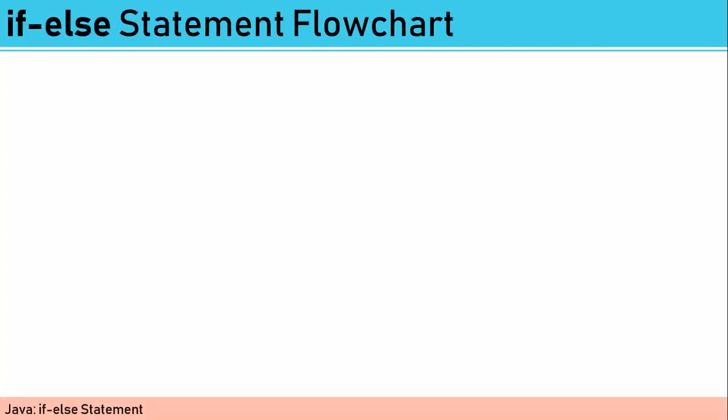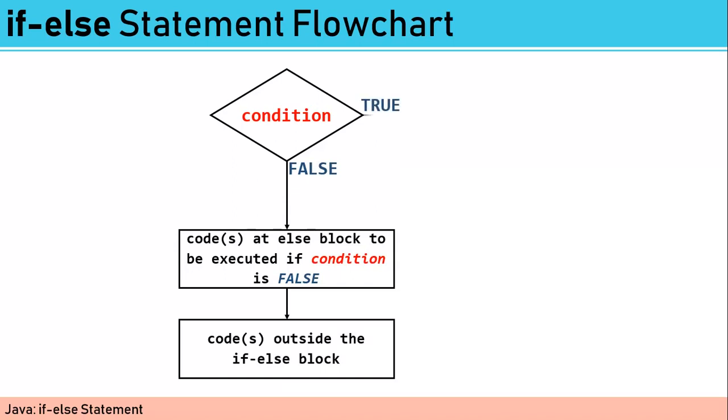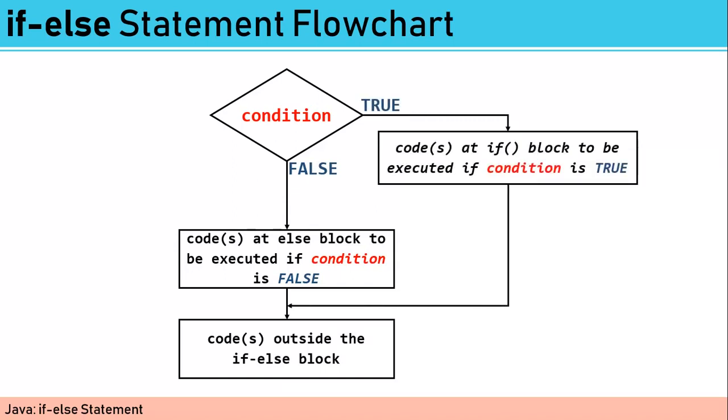We have here the flowchart, and we all know that it always starts with a condition that could either be evaluated true or false. For example, if we have a condition that is evaluated false, the codes inside the else block are executed and the execution of code will continue outside the if-else block after that.